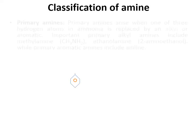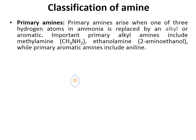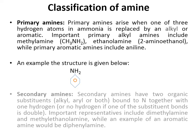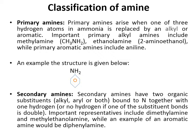Classification of amines: amines can be classified into different types — primary, secondary, tertiary, and sometimes quaternary amines. Primary amines are represented when one of the three hydrogen atoms in ammonia is replaced by an alkyl or aromatic group. An example of a primary amine is methanamine, having CH3-NH2, and another example of a primary amine includes aniline, having an NH group with a ring structure attached to it.